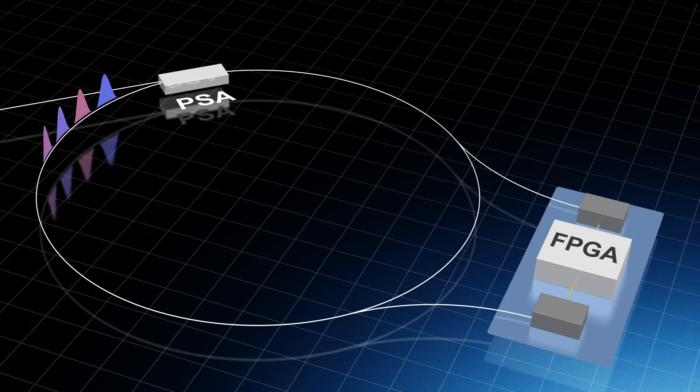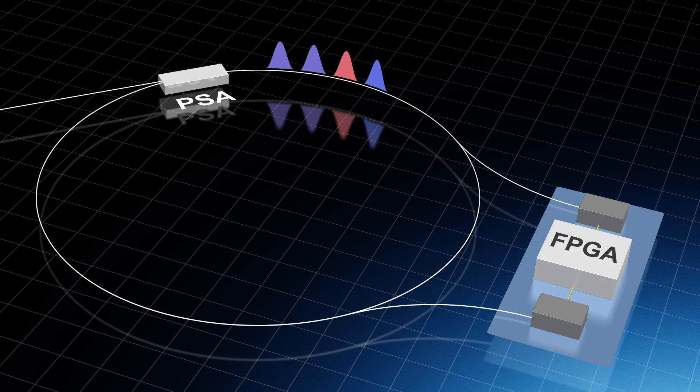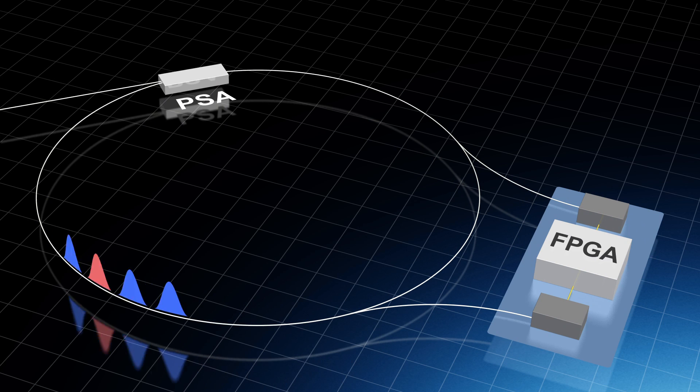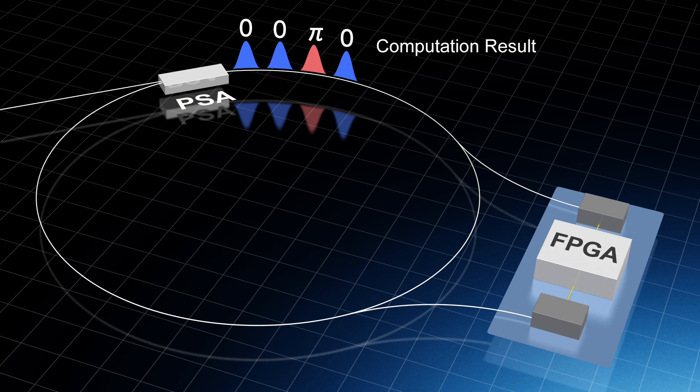The FPGA repeats this process each time the light pulse circles the loop. As a result, due to the effects of the PSA, each pulse gradually approaches either zero or pi. When it is determined to be either zero or pi, we have the computation result.